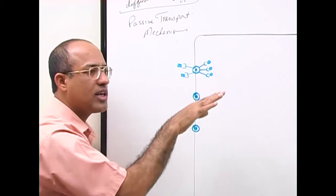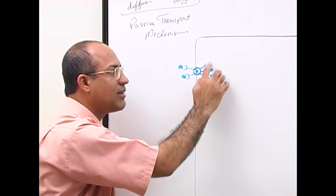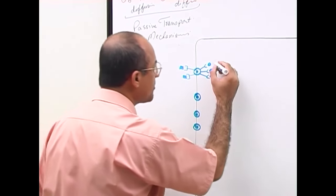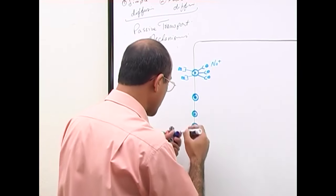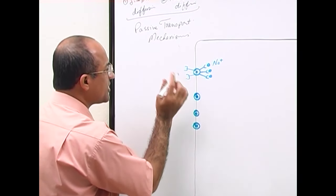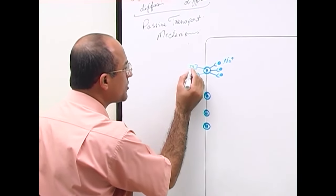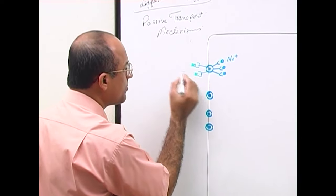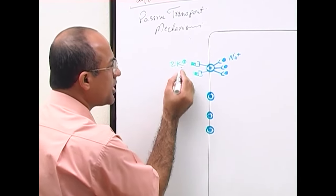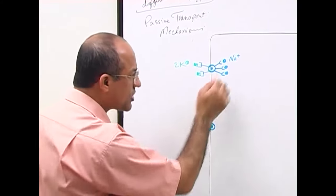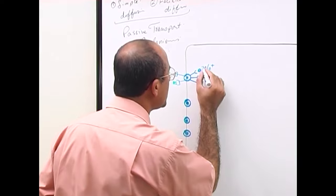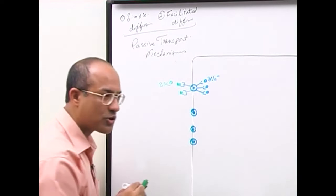The three domains hang inside the cell and love to bind sodium—they bind three molecules of sodium. The two domains hanging outside the cell love to bind potassium; these are the potassium-binding domains, while the three inside are the sodium-binding domains.